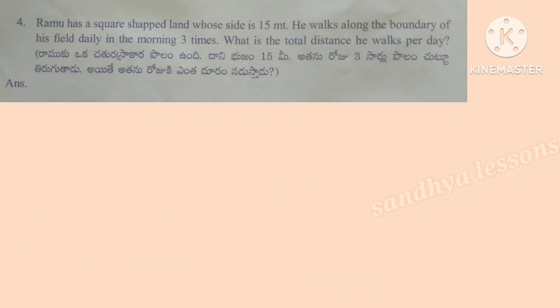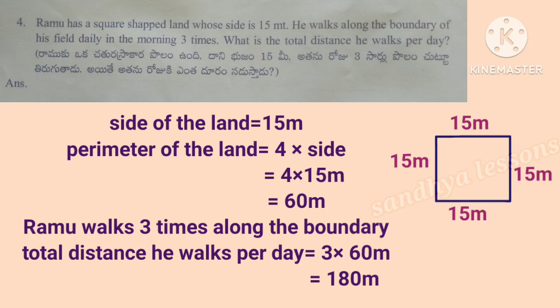Fourth problem: Ramu has a square-shaped land whose side is 15 meters. He walks along the boundary 3 times every morning. What is the total distance he walks per day? Perimeter of the land equals 4 into 15 meters, which equals 60 meters. Ramu walks 3 times along the boundary, so total distance equals 3 into 60 meters, which equals 180 meters.